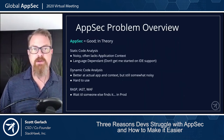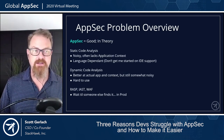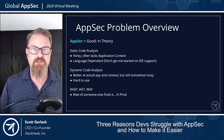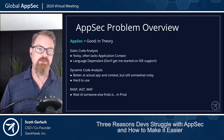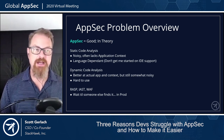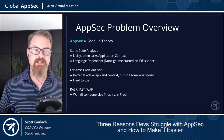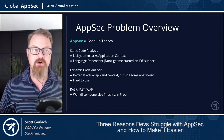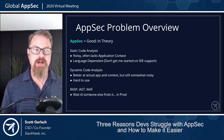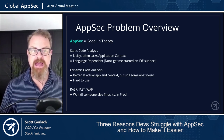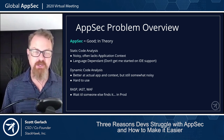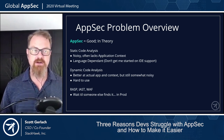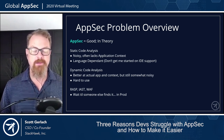Let's start with an overview of AppSec. AppSec is good in theory. There are tools like static code analysis, dynamic code analysis, RASP, IAST, and WAF. All these things build a really robust application security program.